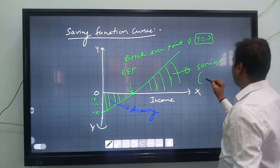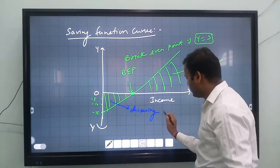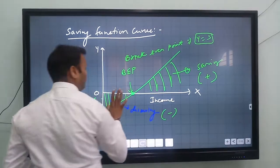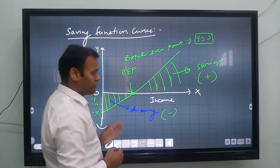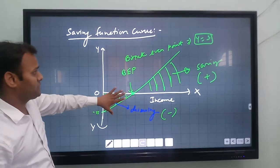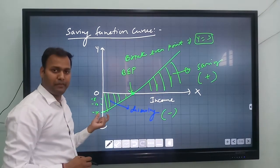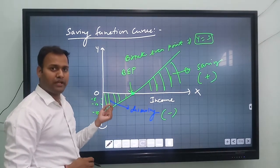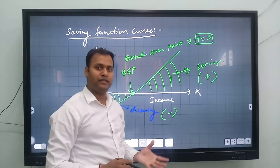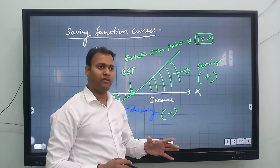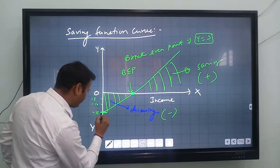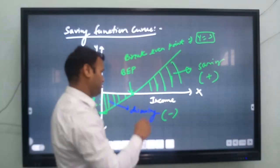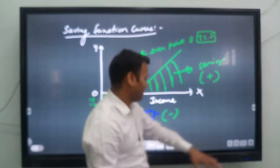The portion above the x-axis is known as saving, where savings are positive. Below the break-even point, savings are negative. The saving function always starts from the negative portion because when the consumer's income is zero, saving will be negative. As income increases, saving also increases.